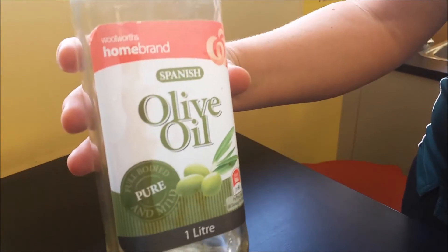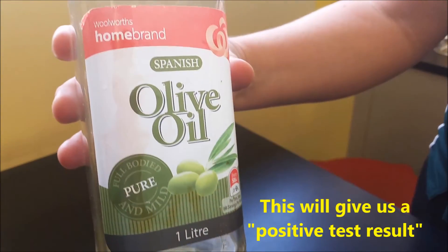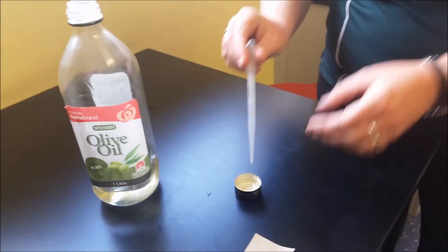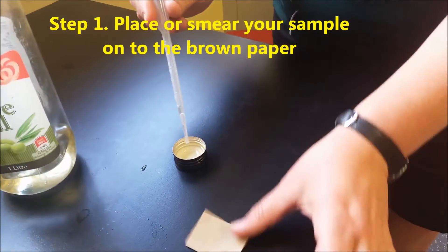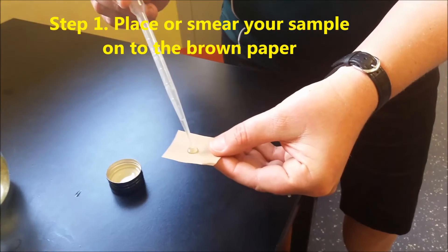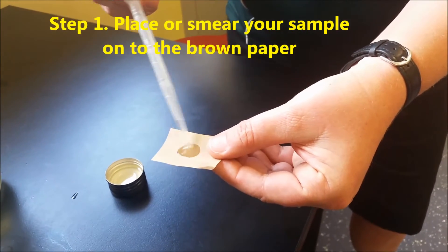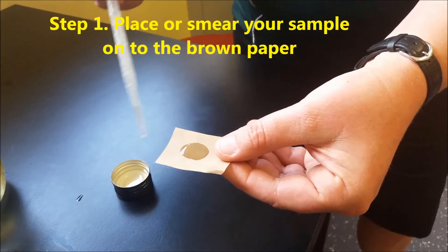The fat that we are going to use is olive oil because we know that that is a type of fat. We are going to put just a little bit of fat onto the brown paper. I am just smearing it in.